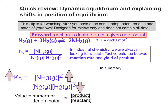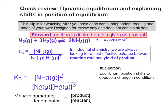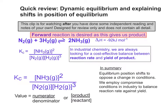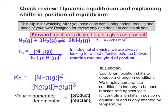To summarise the points made in this clip: equilibrium position shifts to oppose the changing conditions. We employ compromised conditions in industry to balance reaction rate against yield. Kc controls any shifts in position of equilibrium, but is only affected by temperature — not concentration or pressure. Thanks for listening. Hopefully this has pulled it together for you a little bit.